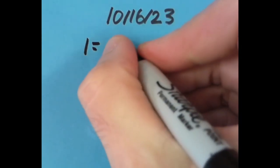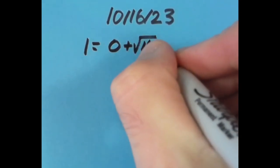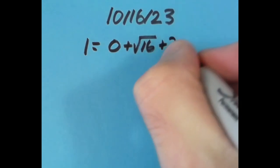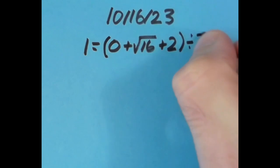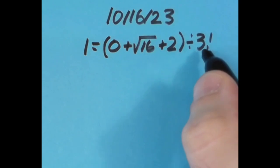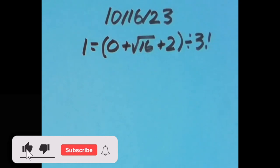I said that 1 equals, then I'm going to do 0 plus the square root of 16, that's going to be 4. 0 plus 4 is 4, 4 plus 2 is 6. I want to take all of that 6 and divide it by 3 factorial. 3 factorial means multiply all the way down from 3 to 1, so this is 3 times 2 times 1, which is 6. There's more information about the factorial in the description. We have 6 divided by 6, giving us 1.